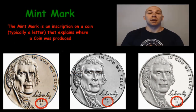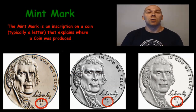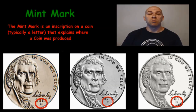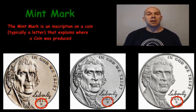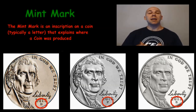Mint mark. When you hear people talk about the mint mark on a coin, they are talking about the inscription — typically a letter — that tells you where that coin was minted, meaning where it was produced. For example, on the nickel shown here, the D means that nickel was minted in Denver, the P is one that was minted in Philadelphia, and the S mint mark means it was minted in San Francisco.